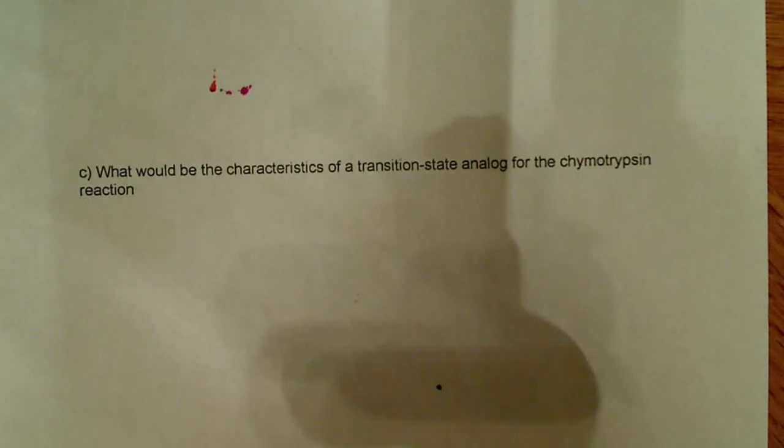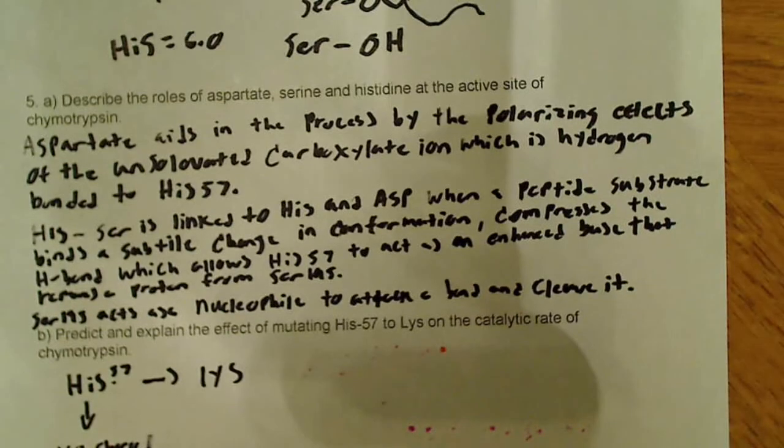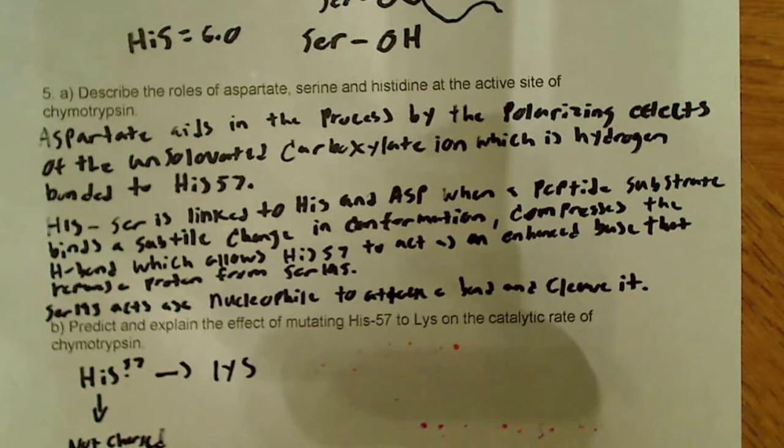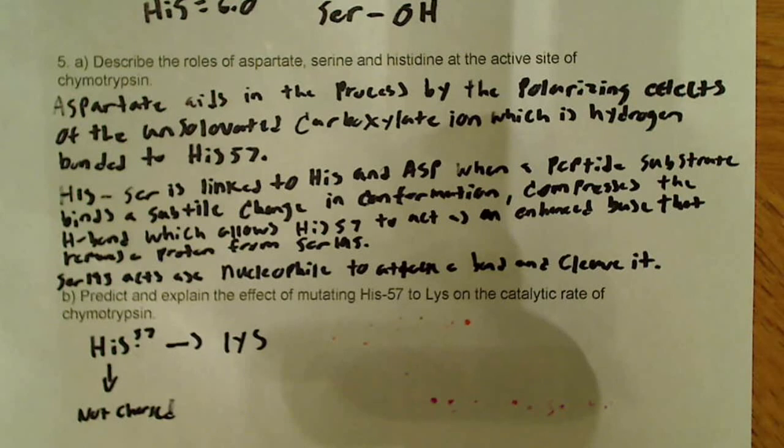So the tetrahedral transition state analog would look a lot like the transition state. I don't know how helpful this video will be overall, I just wanted to kind of briefly, intuitively go over these questions, because they're a bit difficult, and maybe, in my opinion, just a lot more memorization than they really are true problem solving.